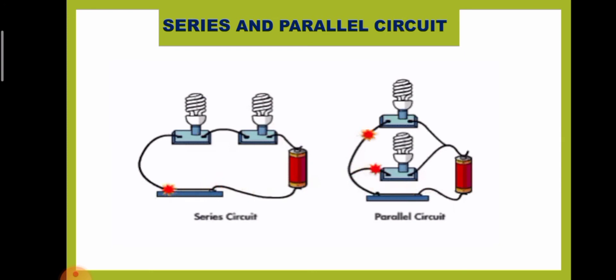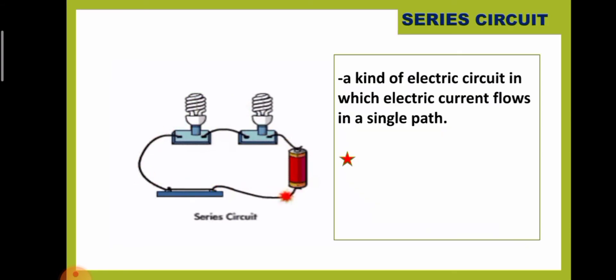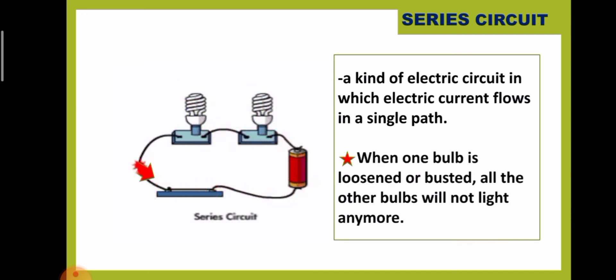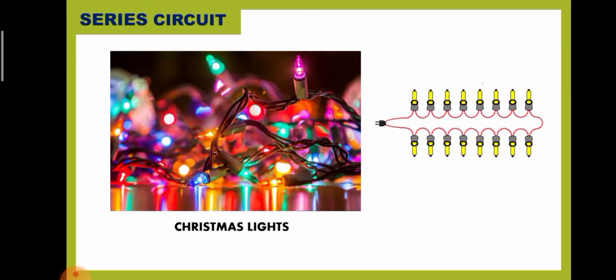The series and the parallel circuit are the two types of electrical circuit. A series circuit is a kind of circuit in which electric current flows in a single path. When one bulb is loosened or busted, all the other bulbs will not light anymore. Christmas lights are a good example of a series circuit — if you remove one bulb, the other bulbs will not light up because the path of electricity is broken.